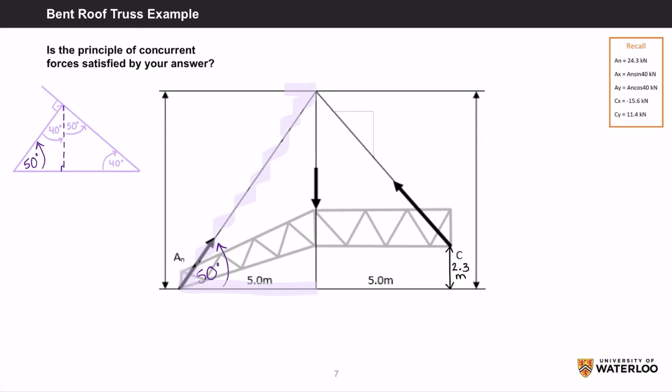Using the Z pattern, we can see that this angle here is also 50 degrees, which means that this angle is 40 degrees assuming this creates a 90 degree angle.